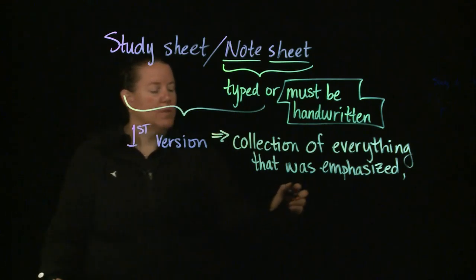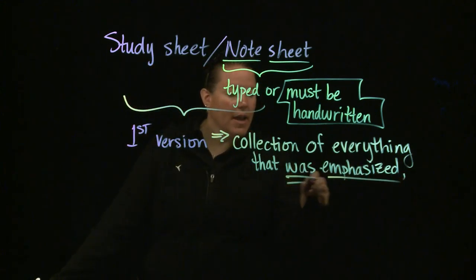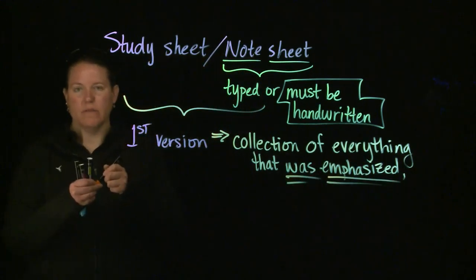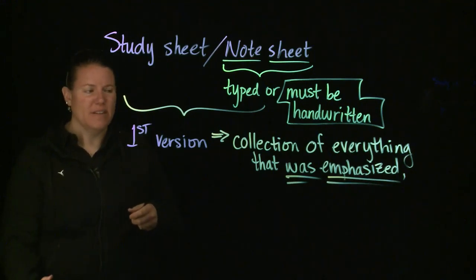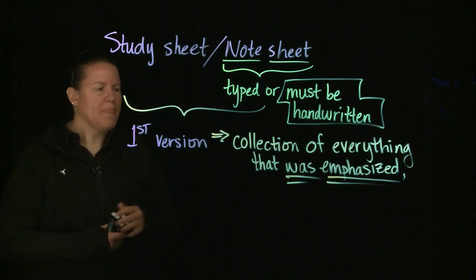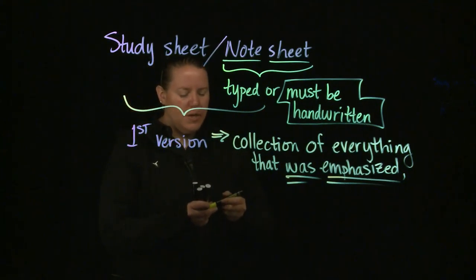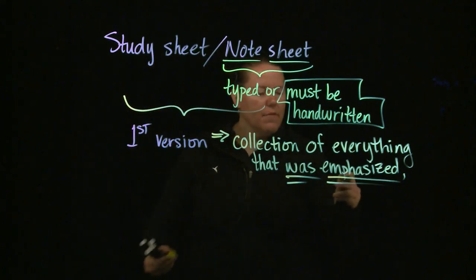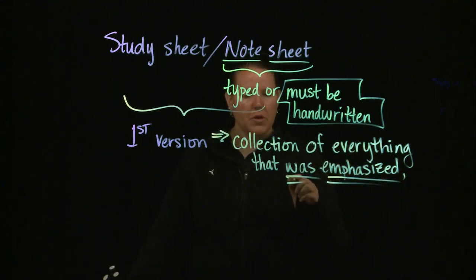But you can also figure out what was emphasized by how important it is in the book. Does the book spend a lot of time on it? Because if the book spends a lot of time on it, it's probably important. A collection of everything that was emphasized in class or in the book. Everything that you think is going to be on the test.